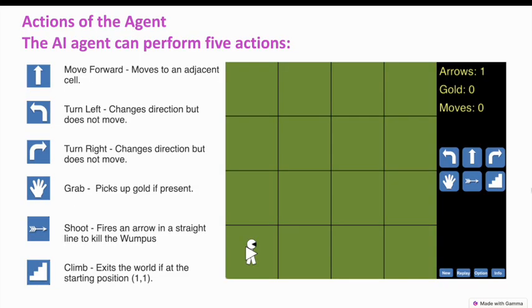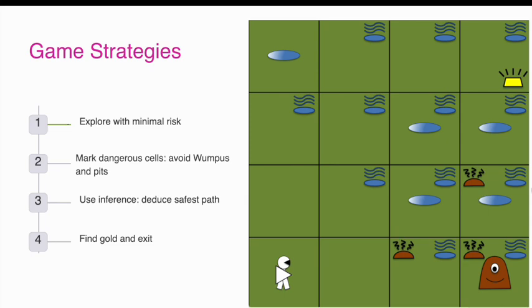Actions of the agent: the AI agent can perform 5 actions. Move forward moves to an adjacent cell. Turn left and Turn right change direction but do not move. Grab picks up gold if present. Shoot fires an arrow in a straight line to kill the Wumpus. Climb exits the world if at the starting position 1,1. Game strategies include: explore with minimal risk, mark dangerous cells, avoid Wumpus and pits, use inference to find the safest path, and find gold and exit.